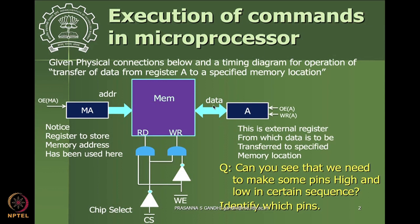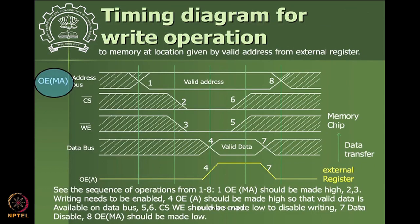Then you want to enable the chip select so that the write operation is enabled. Valid data needs to be on the data bus - by making the output enable pin high, the data from register A becomes available on the data bus. This is captured in a timing diagram showing output enable for memory address and output enable for the data register in sequence.